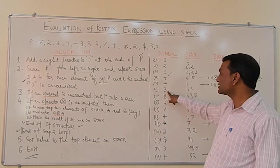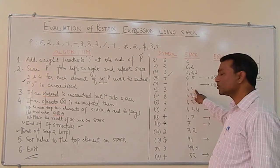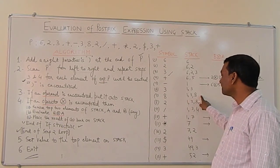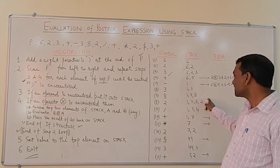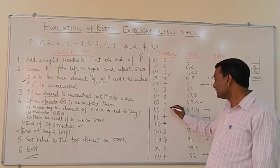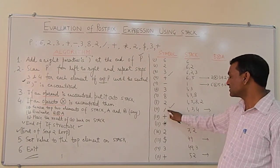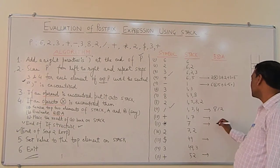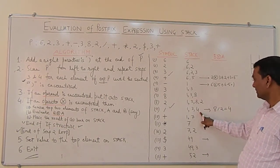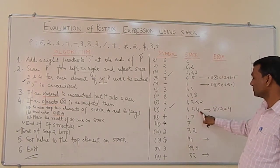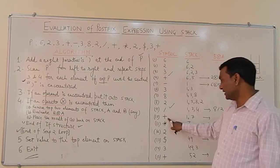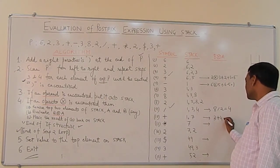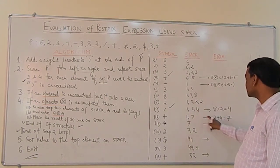Now the next element, 3, is an operand — directly pushed onto the stack. Then 8 is also pushed, and then 2, making the stack 1, 3, 8, 2. We then get the division operator, so 8 divided by 2 equals 4. The stack becomes 1, 3, 4. Next we get plus: 3 plus 4 equals 7. The stack becomes 1, 7.